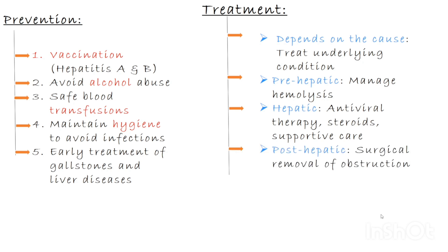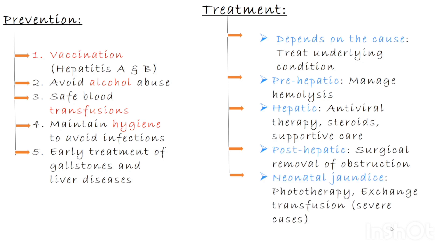In post-hepatic jaundice, there is a blockage in the bile duct that must be removed. This may include surgery to remove gallstones, endoscopic procedures like ERCP to clear the bile ducts, and treating tumors if cancer is causing the blockage. For neonatal jaundice, most cases of physiological jaundice resolve on their own. If bilirubin levels are high, phototherapy is used — a special blue light that helps break down bilirubin in the skin. In very severe cases, an exchange transfusion may be needed to quickly lower bilirubin levels.